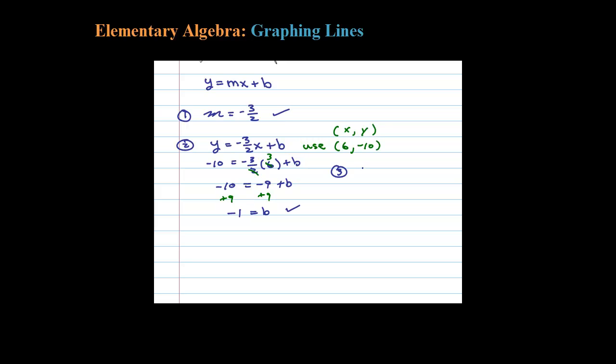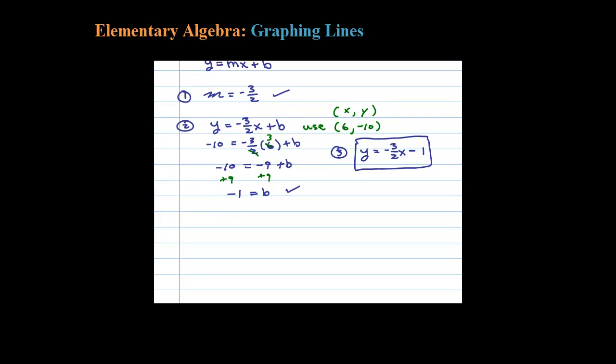Once you have M and once you have B, for step number 3 you just put it all together. You know y = mx + b, so y = -3/2x - 1. This here is actually the equation of the line with slope -3/2 passing through the point (6, -10), but it also wanted us to graph this.